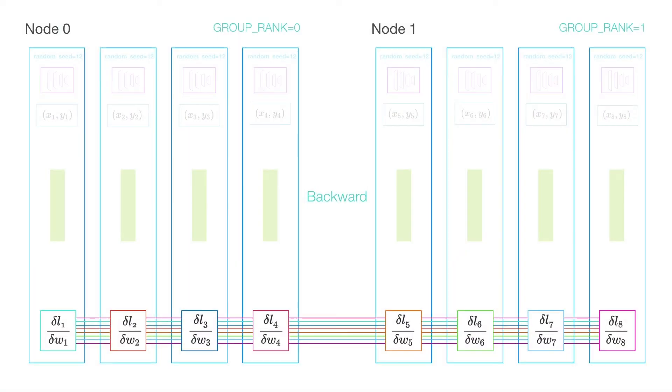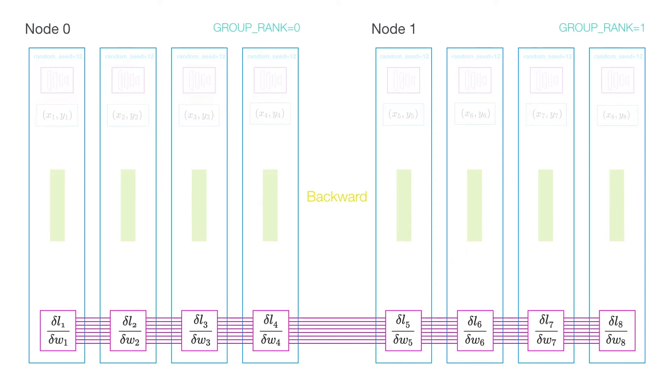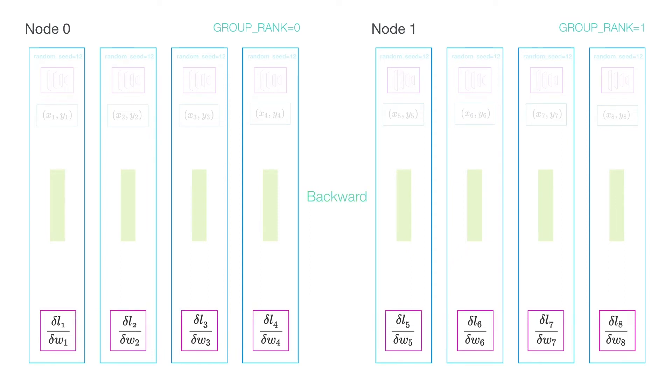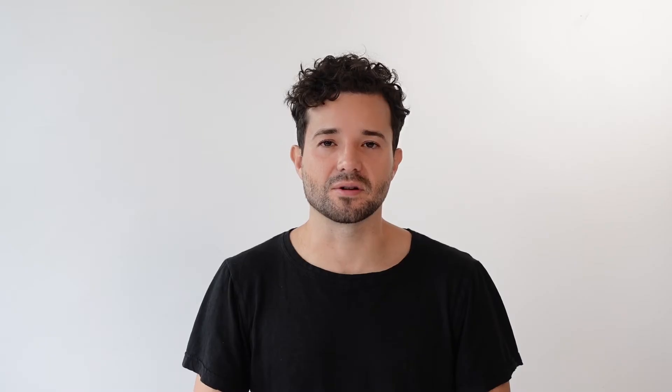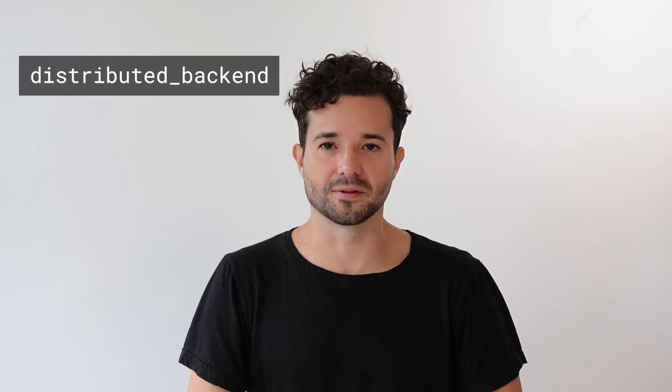Once every process has synced all the gradients on average, all the optimizers in each individual GPU will update the weights. It is very important in DDP that you set the seed, because each process will instantiate its own individual copy of the model, and if the seed is different, the model weights will all be different. DDP is the fastest and recommended way of doing training, but you can pass in a different distributed backend flag to Lightning to use a different approach.